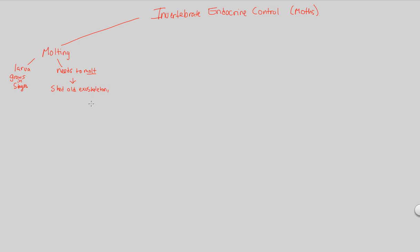The reason why you're shedding the old exoskeleton is to then secrete a new one. Why? Because you are constantly growing — getting bigger and bigger — so your old exoskeleton is no longer able to cover you, and you need to shed it and secrete a new one. Since we're studying the endocrine system, the question is: what regulates the need to molt? All of this is controlled via the endocrine system.